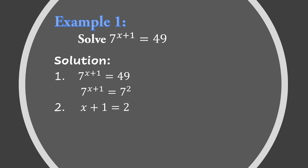To get the value of x, we subtract 1 from both sides — or transpose the positive 1 to the right side, changing its sign to negative 1. So x equals 2 minus 1, which gives us x equals 1.